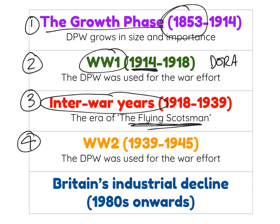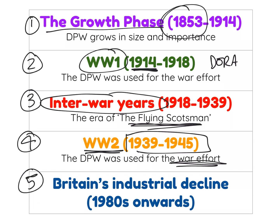The fourth phase is World War II. Again, the Doncaster Plantworks was used for the war effort for around six years. Then we have a period of continuity where employment remained very high during the 50s, 60s and 70s. But from the 1980s onwards we have the fifth phase — Britain's industrial decline — and when Britain's industrial output went down, so too did that of the Doncaster Plantworks, and we began to see its decline and eventually the demolition of part of it.